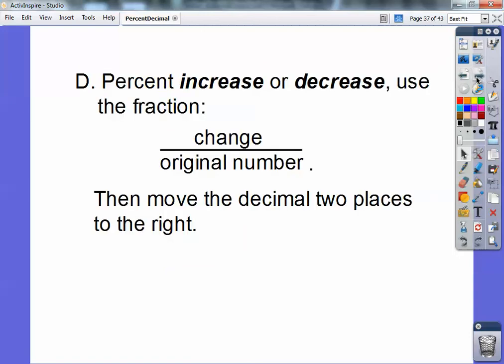And then percent increase or decrease, then you use this fraction. You find the change between the two. The change is the subtraction. How much did it change? And then this is the starting number, the beginning number. And then you divide. You take this number divided by this number, and then move the decimal over two places to the right, and that would be your percent increase or decrease.